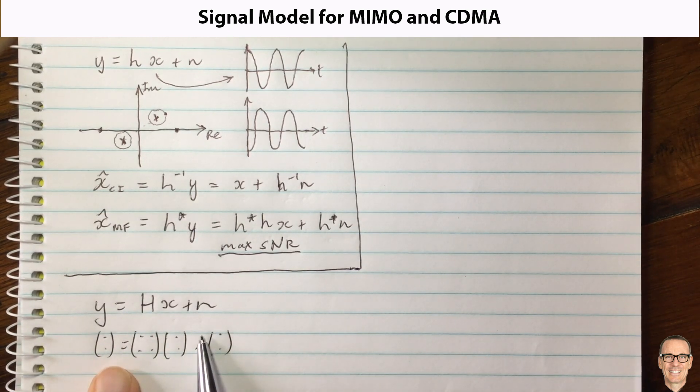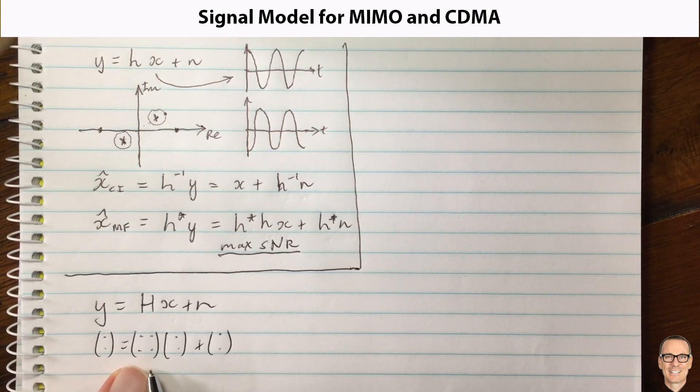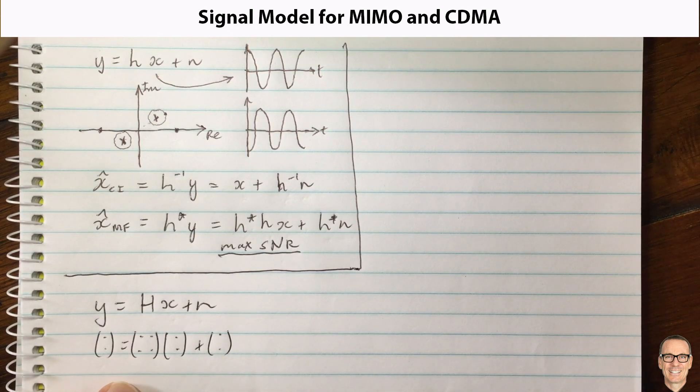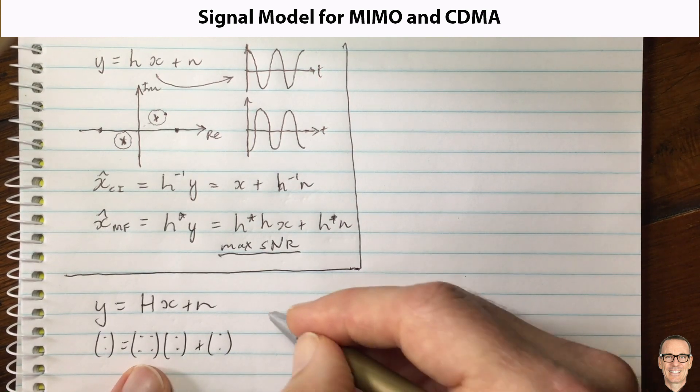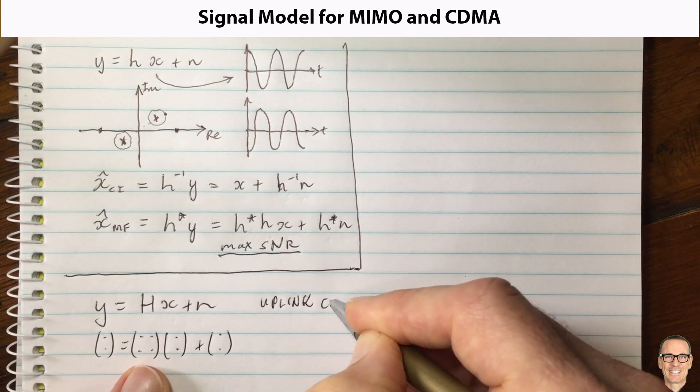So why are we considering this? Let's think of two particular examples. One is a CDMA example. For example, this could be the uplink in a CDMA system. This is one example. I'm going to write uplink CDMA.